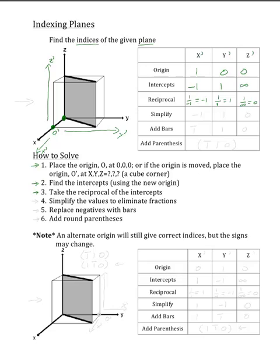Now our next step is to simplify these values to remove any fractions. As you can see, negative 1, 1, and 0 do not have any fractions, so for this step we can keep the numbers the same.